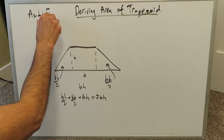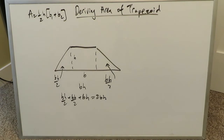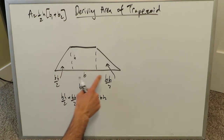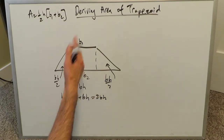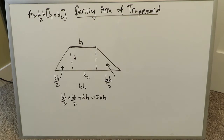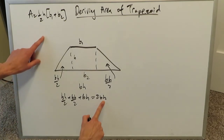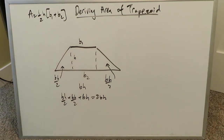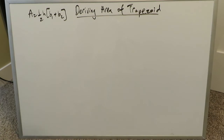But generally you know the area to be half times height times b1 plus b2, depending on what type of trapezoid you're looking at — more square or more rectangular. We're going to do a derivation of this trapezoid area formula using integral calculus, and at the end of the video I'll show you how we can reconcile these two results and show they are indeed the same.